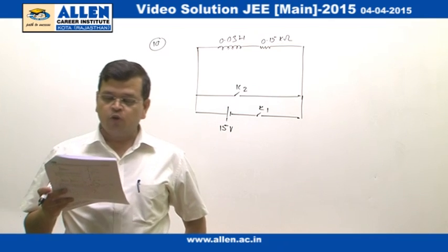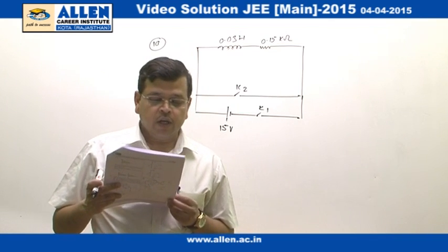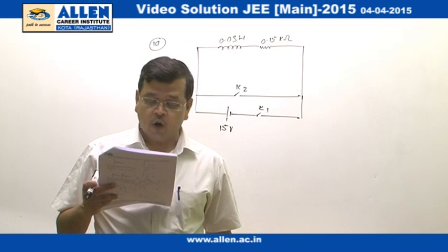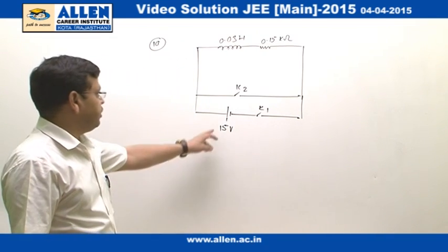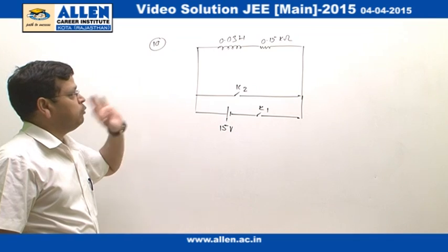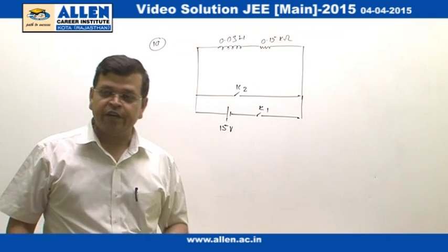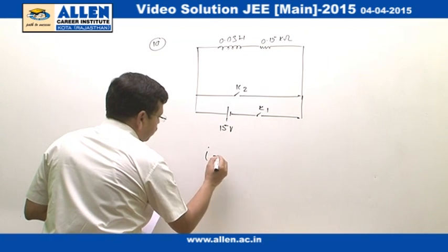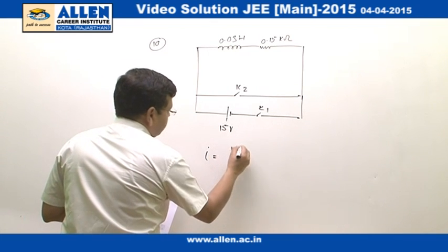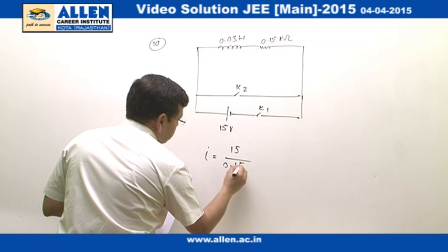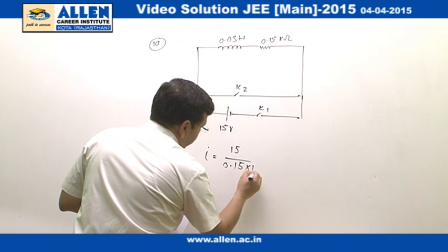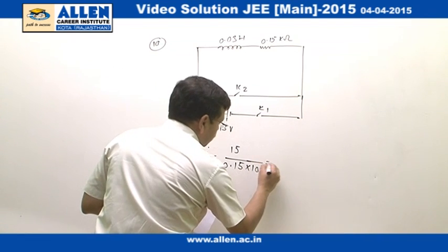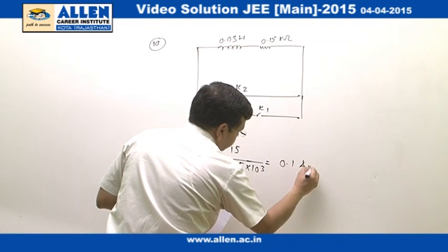It is given that at T equals 0, initially K1 has been kept closed for a very long time and we know that if K1 is being closed for a very long time, we are allowing the steady state current to establish in this circuit and the value of that current is going to be 15 over 0.15 into 10 to the power 3 which turns out to be 0.1 ampere.